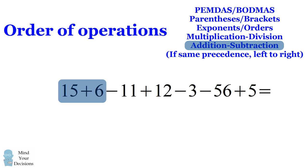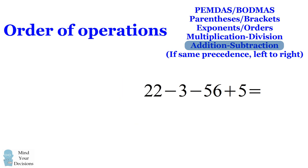21 minus 11 is 10. 10 plus 12 is 22. 22 minus 3 is 19.